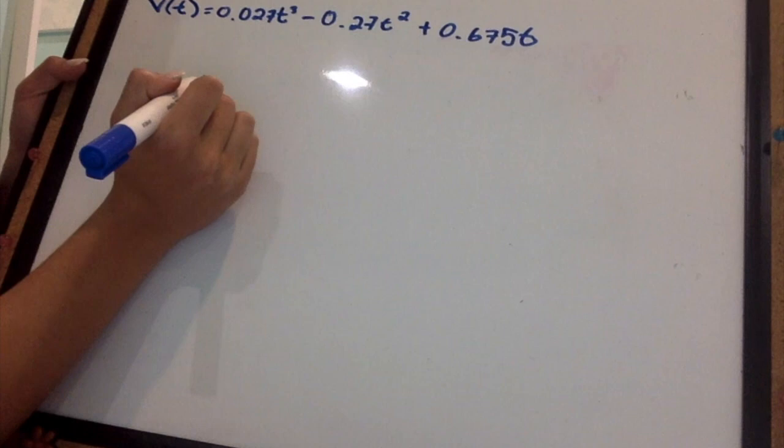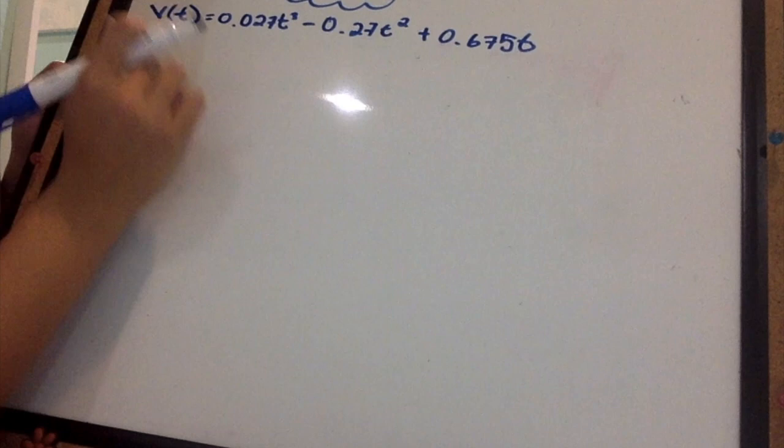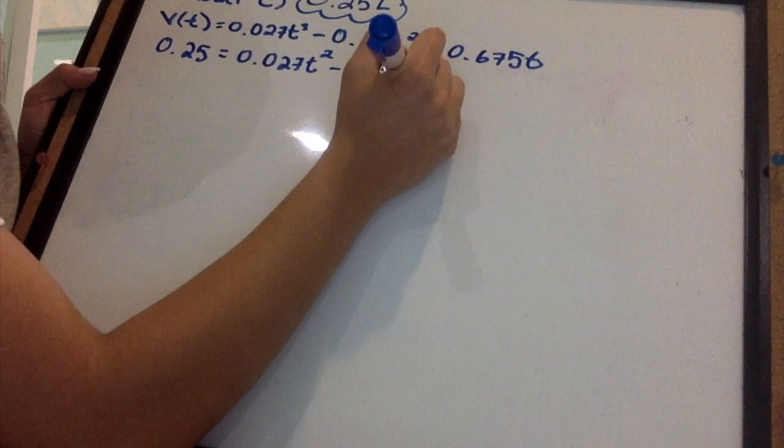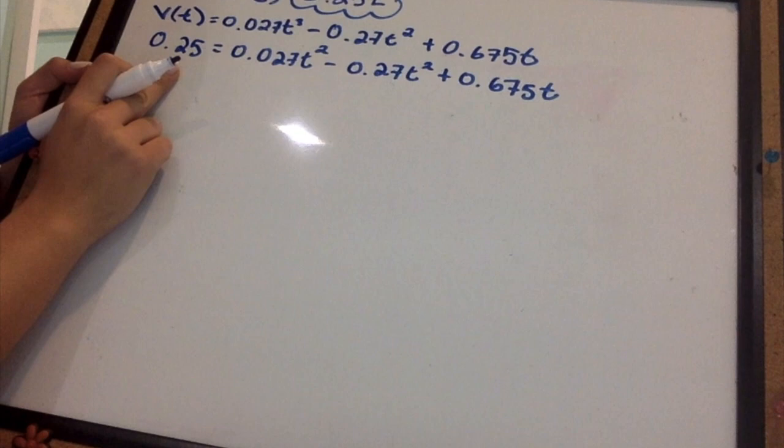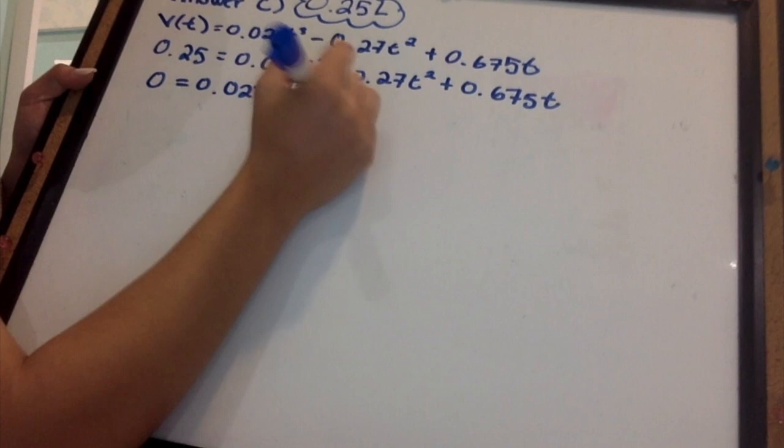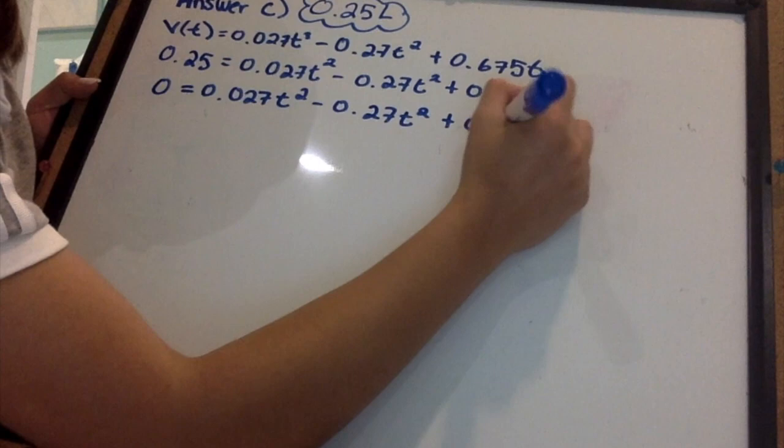Now, I know 0.25 is the volume I have, so I will be subbing that variable into the V at t. Once that value has been subbed in, my goal is to move the 0.25 over to set the whole equation equal to 0. The reason behind this is because in order to factor, all variables must be put to one side.